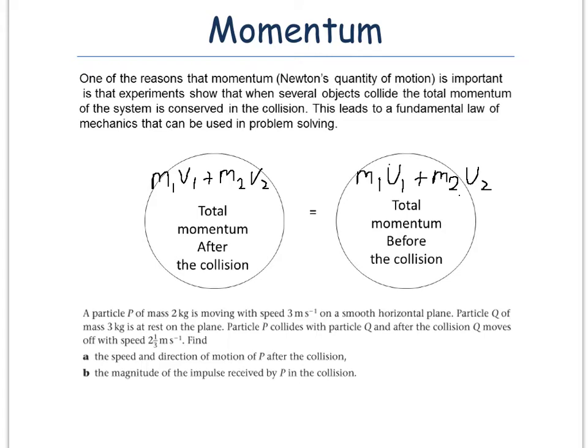It says a particle P of mass 2 kg is moving with speed 3 m per second on a smooth horizontal plane. Particle Q of mass 3 kg is at rest on the plane. Particle P collides with particle Q and after the collision Q moves off with a speed of 2 and a third meters per second.